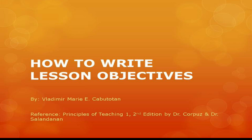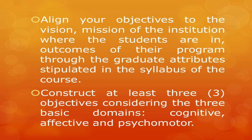We're going to talk about the pointers on how to make lesson objectives. The first pointer is to align your objectives to the vision and mission of the institution, the outcomes of the program, and the graduate attributes stipulated in the syllabus. This first pointer is not in our book, but I want it listed first because it is fundamental in writing educational objectives.